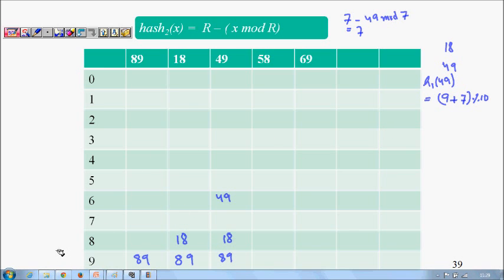Next we try to insert 58. 58 mod 10 will be 8; 8 is already filled with 18. Next we try out the next location, so hash2(x) is 7 - (58 mod 7). 58 mod 7 is 2, so this becomes 5. Your h_1(58) will be 8 + 5 mod 10, 13 mod 10, which is 3. So 58 will come at position 3.